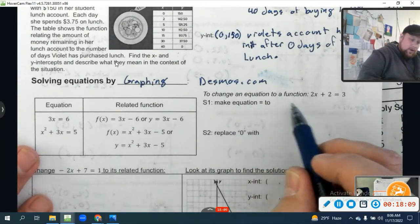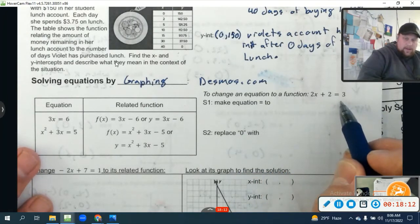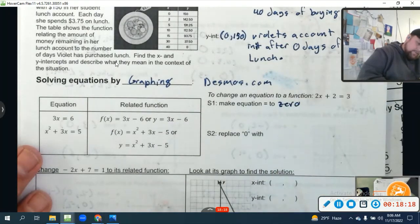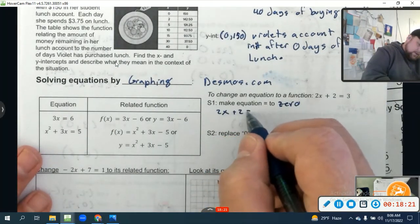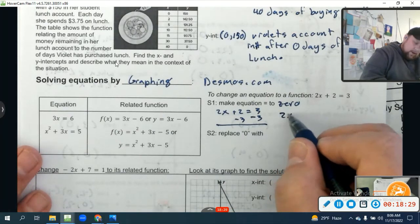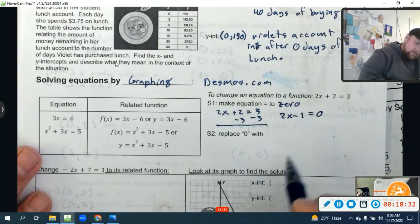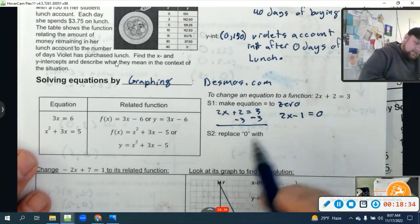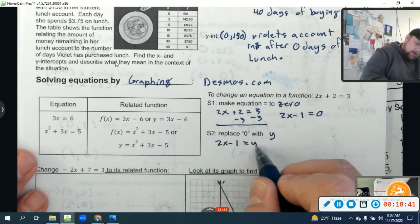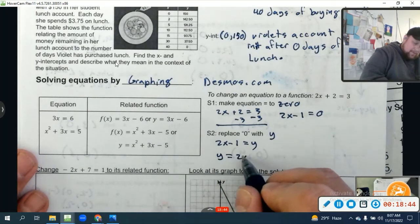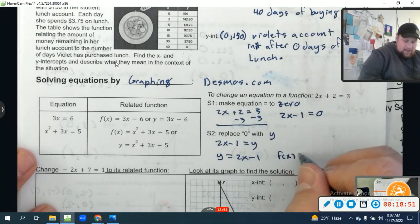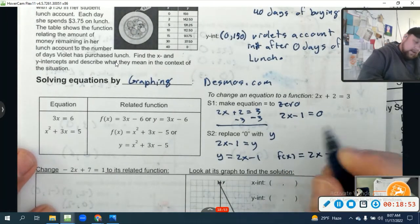Look at 2x + 2 = 3. Step one: we want to make the equation equal to zero. I'm going to take 2x + 2 = 3 and subtract 3 from both sides. We get 2x - 1 = 0. Once we get this, we're going to replace the zero with y. So 2x - 1 = y or y = 2x - 1. When we want to write it in function notation, we just write f(x) = 2x - 1.